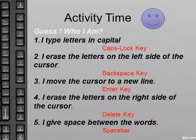Activity time — Guess who am I? Number 1: I type the letters in capital. Answer: Caps lock key. Number 2: I erase the letters on the left side of the cursor. Answer: Backspace key. Number 3: I move the cursor to a new line. Answer: Enter key. Number 4: I erase the letters on the right side of the cursor. Answer: Delete key. Number 5: I give space between the words. Answer: Space bar.